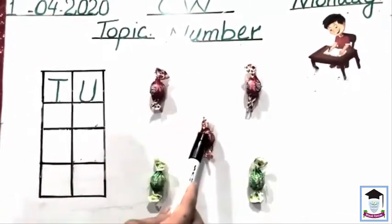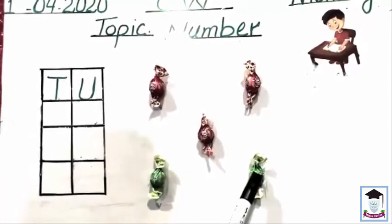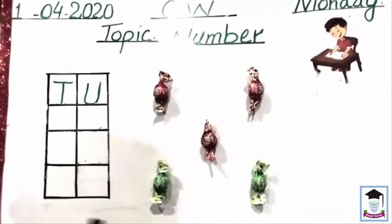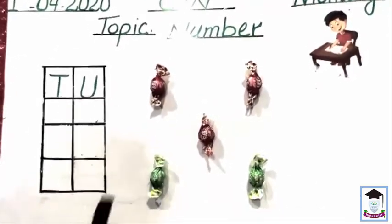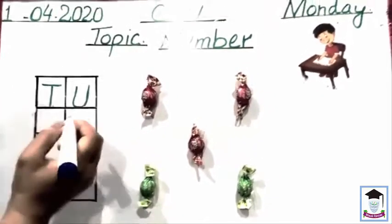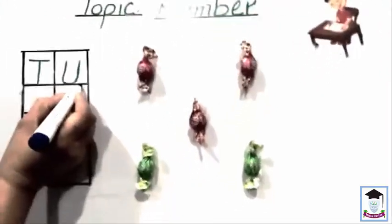Now we will write five. First of all, sleeping line, standing line, curve makes a five.